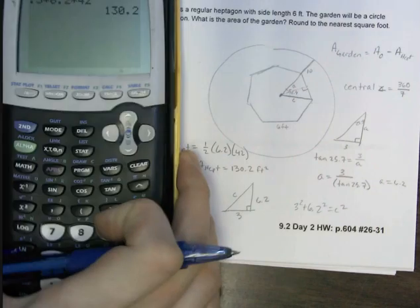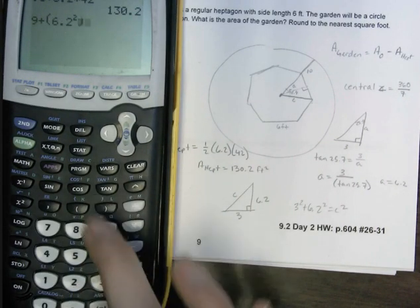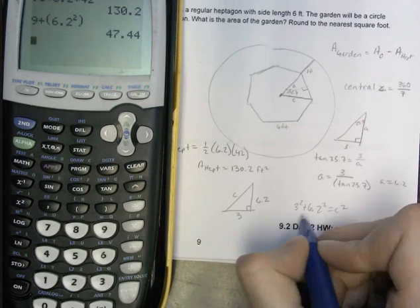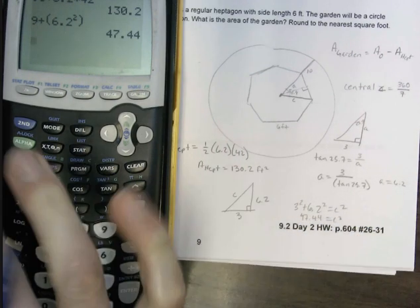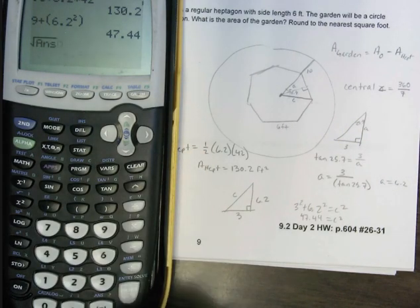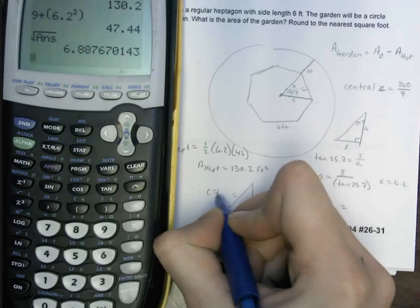So we've got 9 plus 6.2 squared. So I've got 47.44 equals c squared. Take the square root. So we get about 6.9 for c. So c equals 6.9.